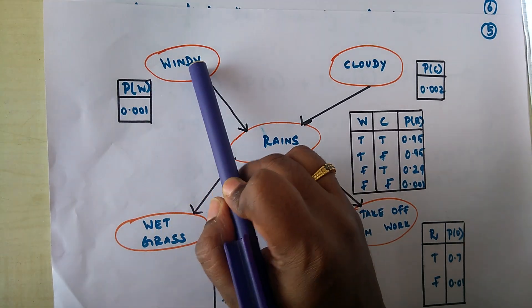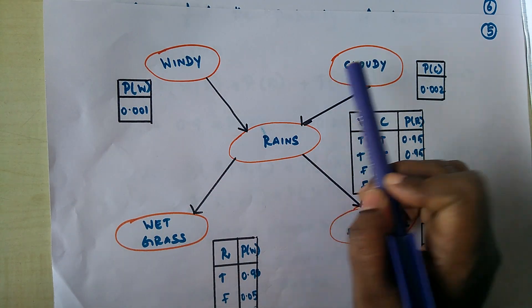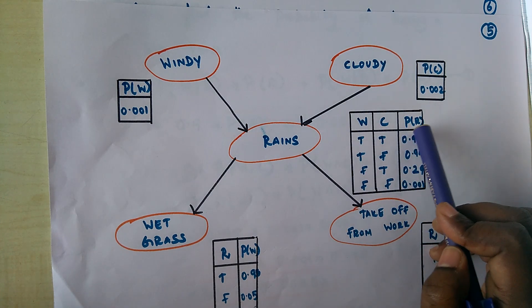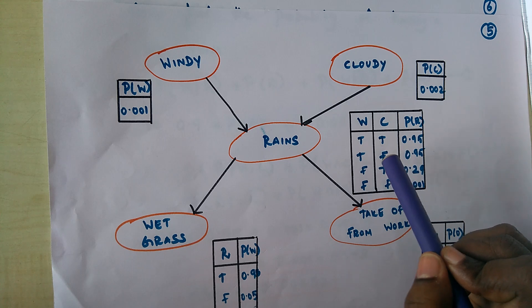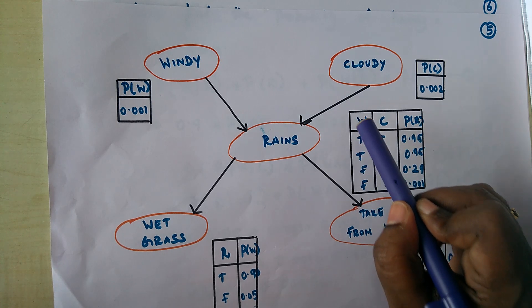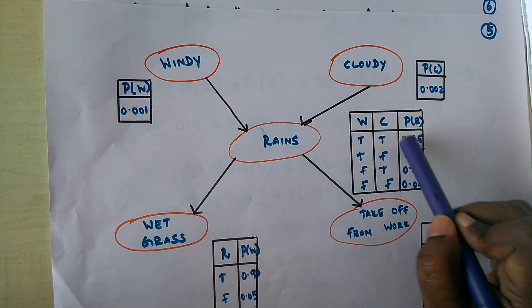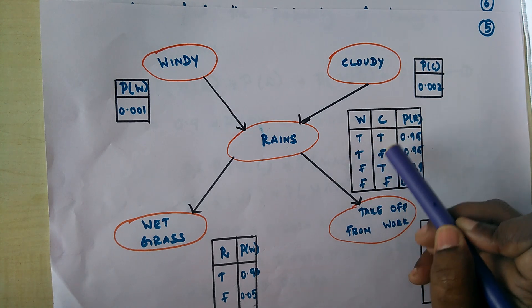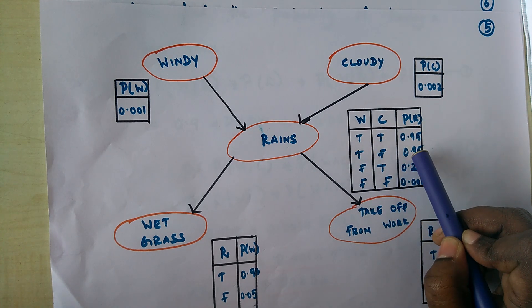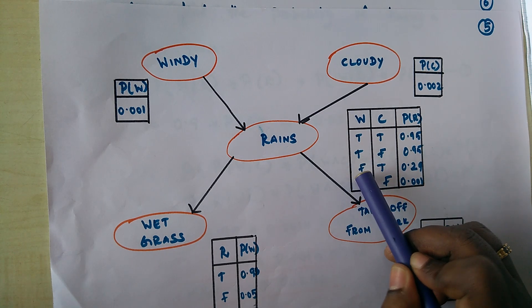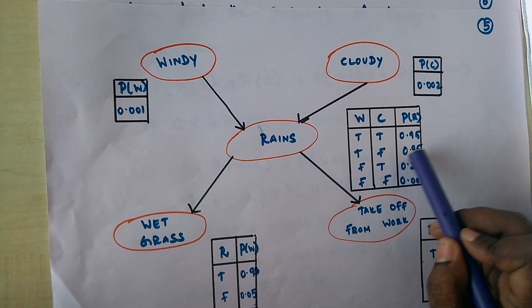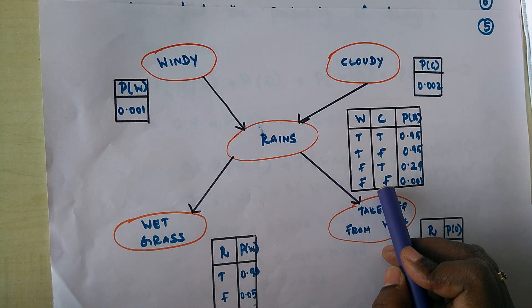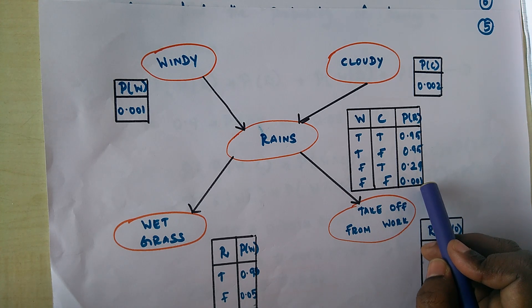This conditional probability table is associated with the rain node. Given it is windy and cloudy, the probability of raining is 0.95. When wind is true and cloudy is false, the probability of rain is 0.95. When wind is false and cloudy is true, the probability of rain is 0.29. When both are false, the probability of rain is 0.001.